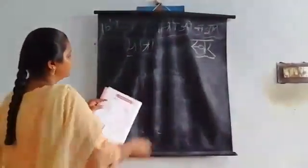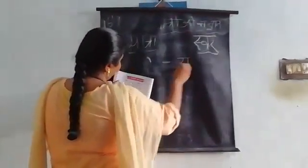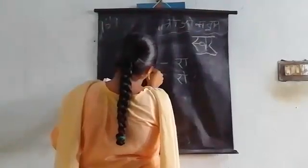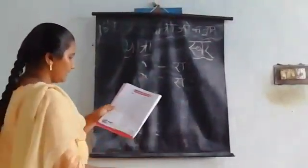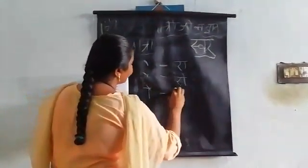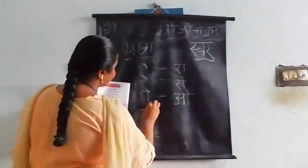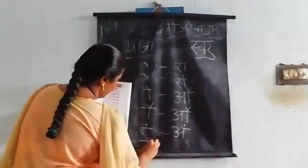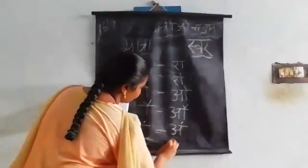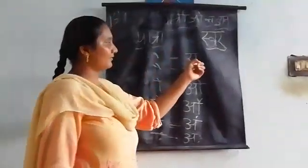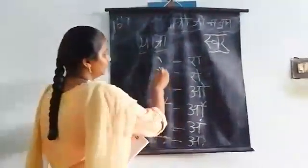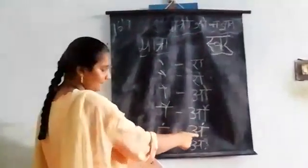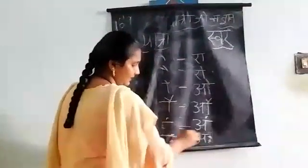And then after A, this is the matra of E. And this one, and this one — this is the matra of I. This is the matra of Wo. And this is the matra of Aw. And this is the matra of Am. And this is the matra of Aha. Sorry children, before I had missed it — this is the matra of I, O, Aw, Am, and Aha.